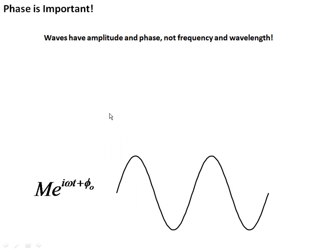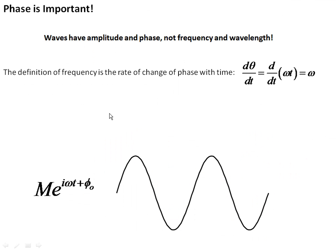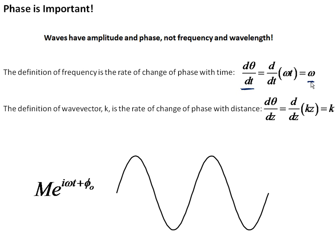Now, it's important to note that we often talk about waves as if they have a certain frequency or a certain wavelength, but waves really mathematically are defined in terms of amplitude and phase. And it turns out there's a relationship of the phase with time. For example, the rate of change of the phase in time, d phase dt, if we plug that in, turns out to be the frequency. Similarly, the definition of wave vector is the rate of change of the phase with distance.